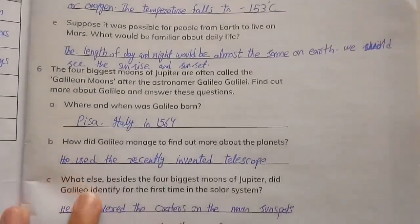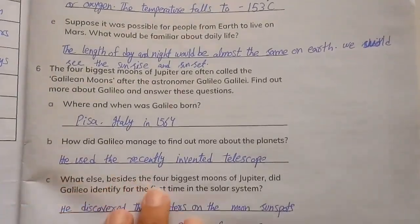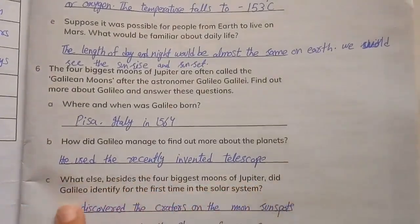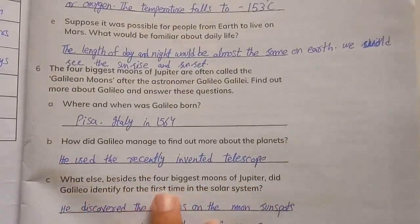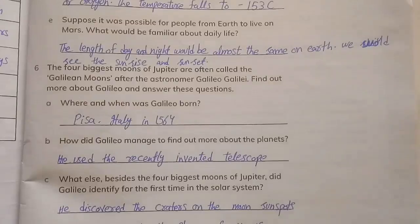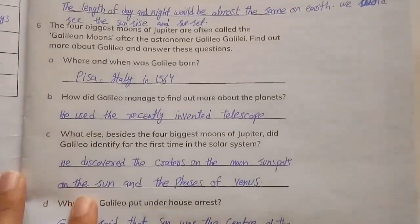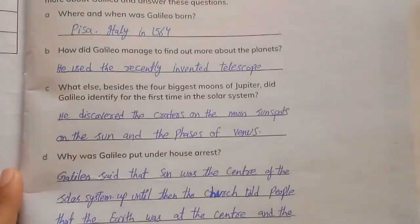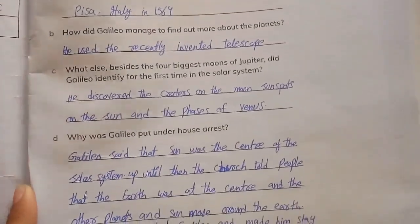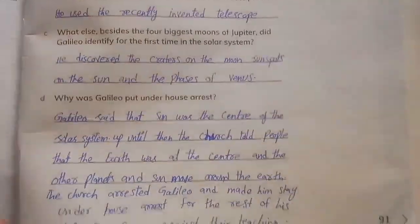What else besides the four biggest moons of Jupiter did Galileo find for the first time in the solar system? He discovered the craters on the moon, sunspots on the Sun, and the phases of Venus. Now, why was Galileo put under house arrest?